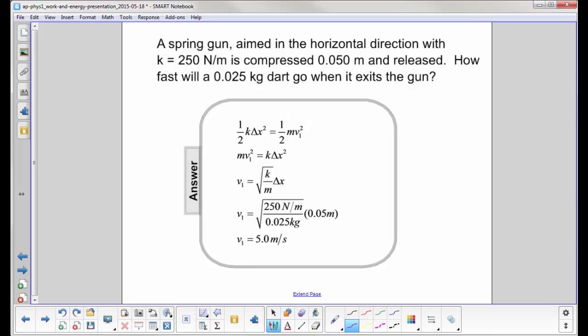We start with conservation of energy. In the beginning, all we have is elastic potential energy, which is one half k delta x squared. And then after the spring is released, the dart moves and it leaves and the spring is totally relaxed, so there is no elastic potential energy at the end. It's all in kinetic energy.